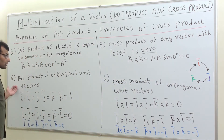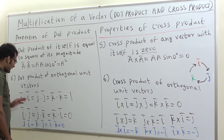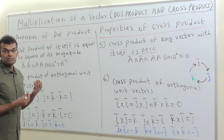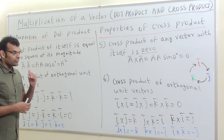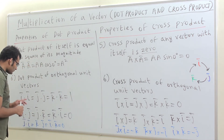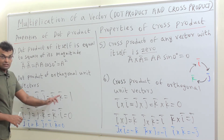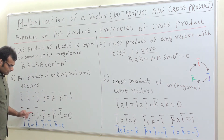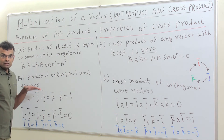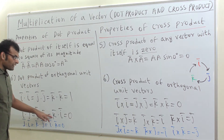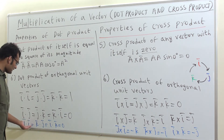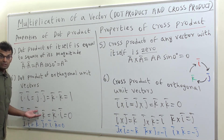Dot product of orthogonal unit vectors: I, J, K are the standard unit vectors discussed in previous videos, each with magnitude 1. I dot I equals J dot J equals K dot K equals 1, because they are parallel vectors and cos 0 is 1. I dot J equals J dot K equals K dot I equals 0, because these pairs make 90 degree angles and cos 90 is 0. The commutative property also applies, so J dot I, K dot J, and I dot K are also 0.